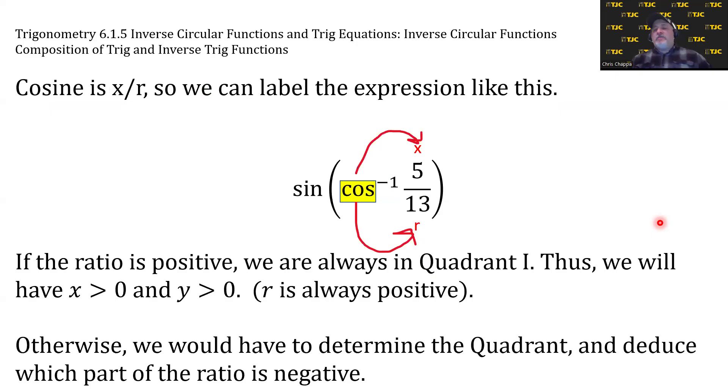Now, the ratio is positive, so we're in quadrant 1. And by the way, if the ratio is positive, we're always in quadrant 1. It doesn't matter what inverse trig function you are. We will have x and y are both positive, r is always positive. If this weren't the case, if that ratio were not positive, we would have to determine the correct quadrant and deduce which part of the ratio is negative. If we were in quadrant 2, x is negative, y is positive. If we were in quadrant 4, x is positive, y is negative. You'll see an example of that shortly. But let's get back to this question.